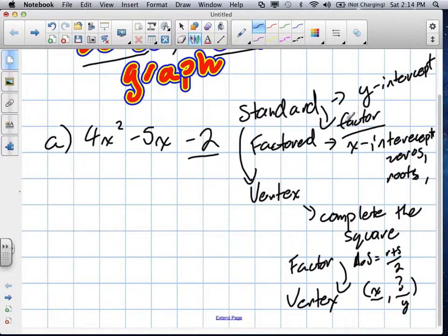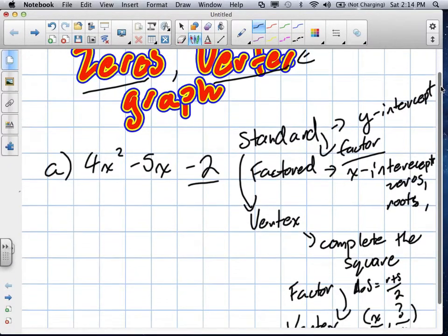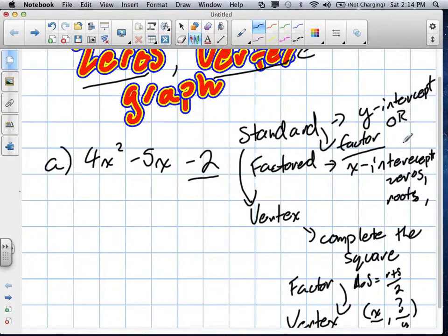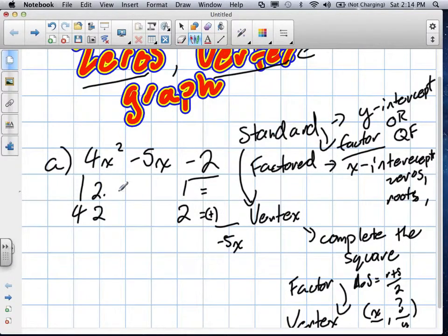Or, if you've already found the x-intercepts, what you can do is find the axis of symmetry, where you add them together, divide by 2. Do you remember that formula? So we're going to try to factor. Factors of 4 are 1 and 4, 2 and 2. Factors of 2 are 1 and 2. We know that we're going to have to multiply these products to add up to negative 5x. We can't factor, so we do have to use the quadratic formula.